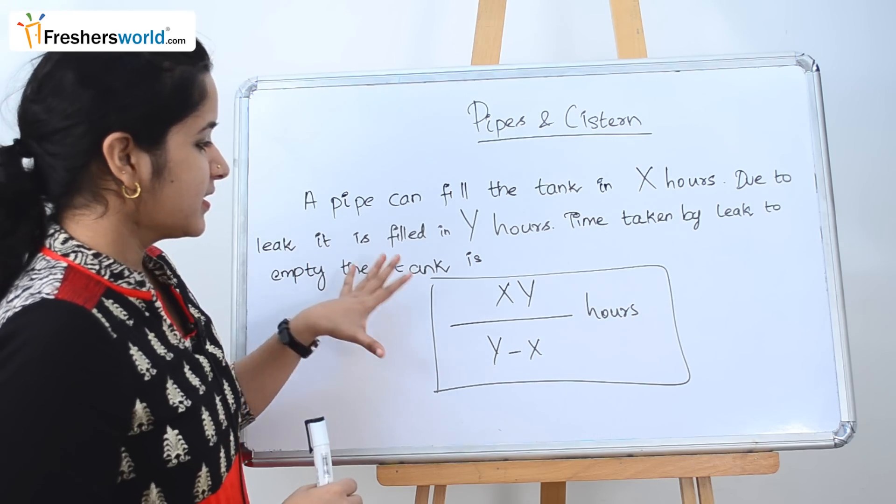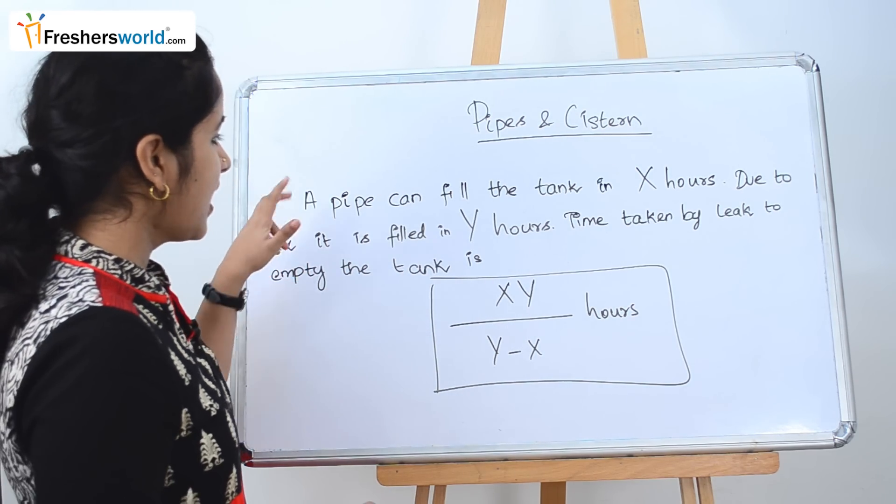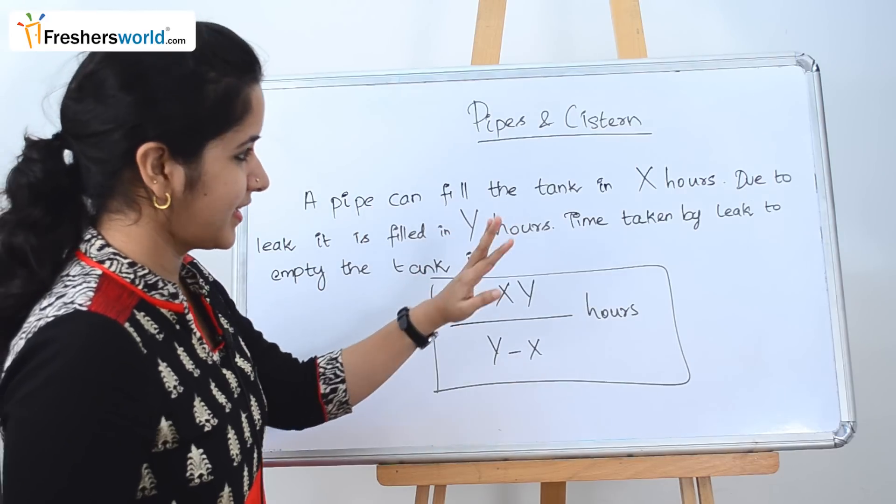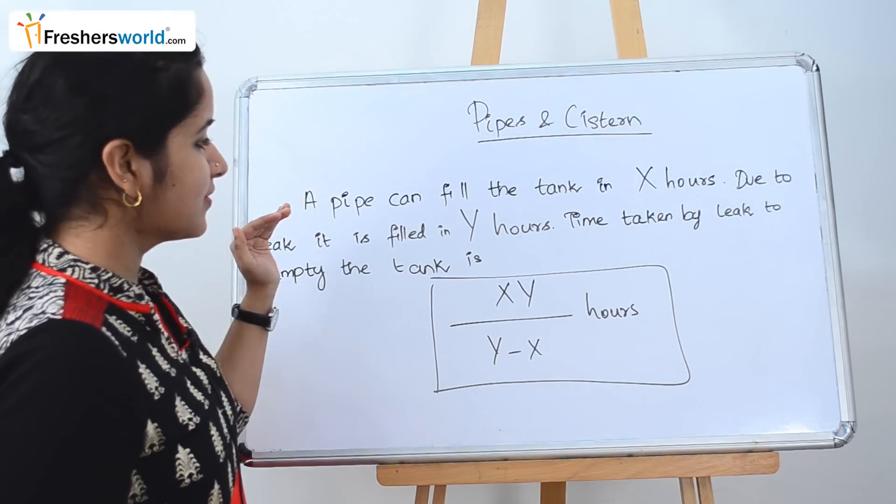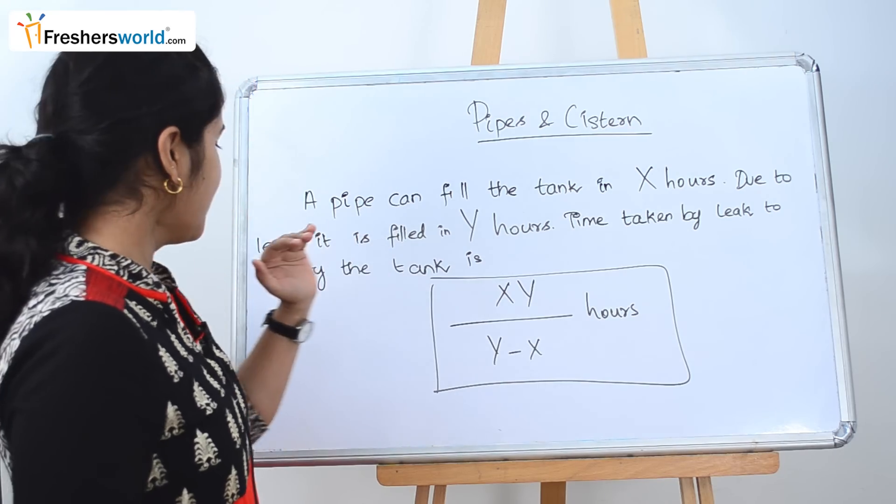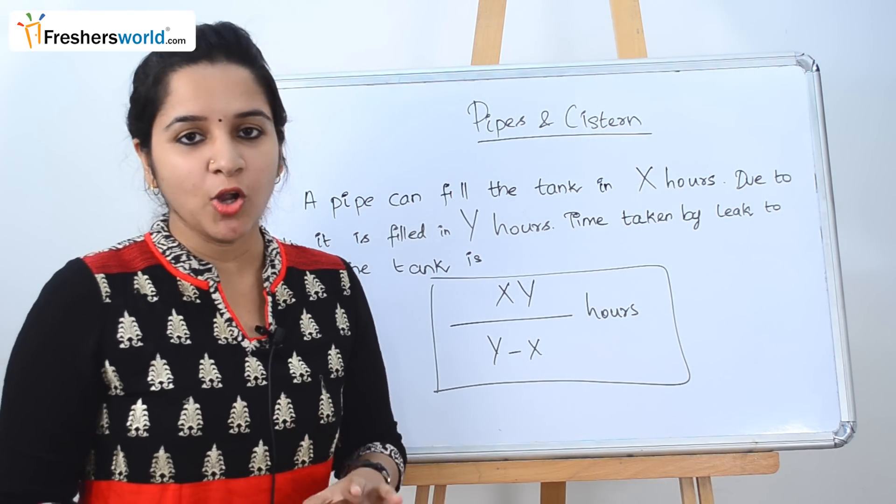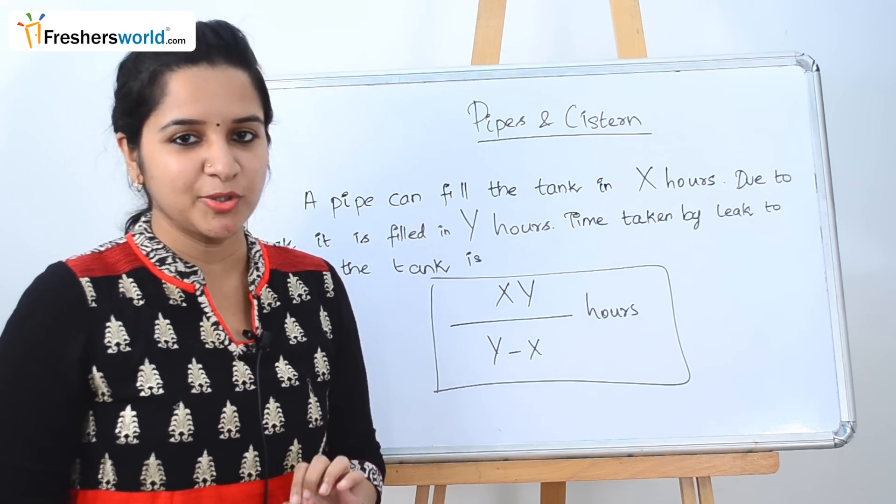So this is the first concept. The type that you can face here is: a pipe can fill the tank in X hours, due to some leakage it is filled in Y hours. Time taken by the leak to empty the tank. This is a very common type of problem that you will face in an aptitude exam.